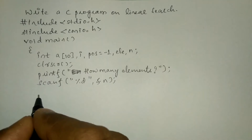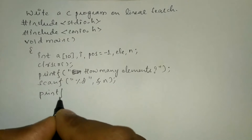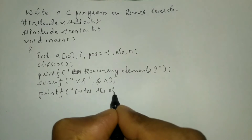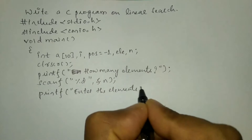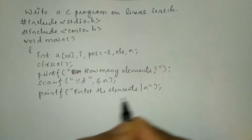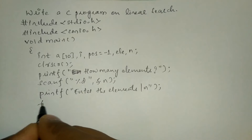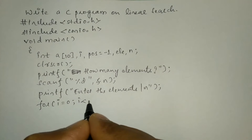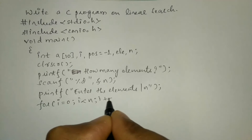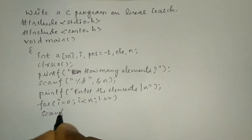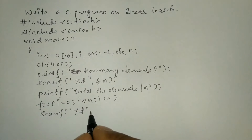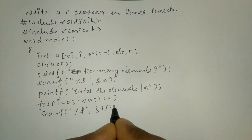After this we have to ask the user to enter the elements using the printf statement, writing enter the elements with a backslash n. Now using the for loop — for i equals 0, i less than n, i plus plus — and inside using scanf with %d and ampersand of a[i] to receive each element.